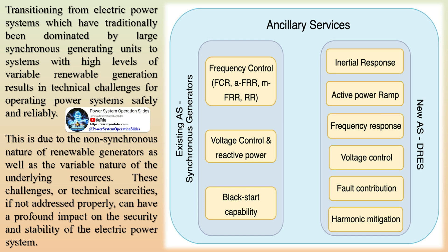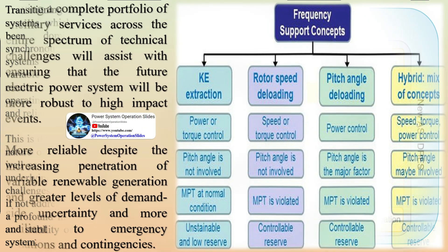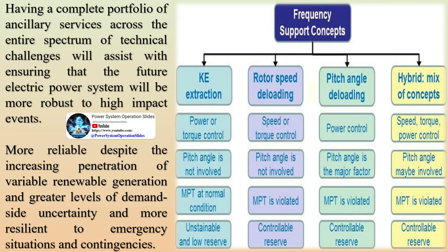These reserve categories are crucial for maintaining the stability and reliability of the electrical grid. Transmission system operators carefully manage and coordinate the activation of these reserves to ensure they can quickly respond to disturbances and maintain the balance between supply and demand. This helps prevent blackouts, voltage fluctuations, and other disruptions in the power supply, ultimately ensuring a continuous and reliable source of electricity for consumers.